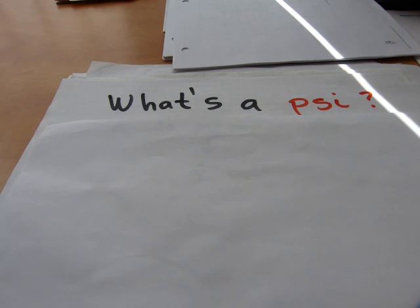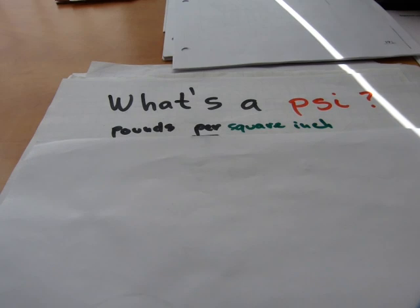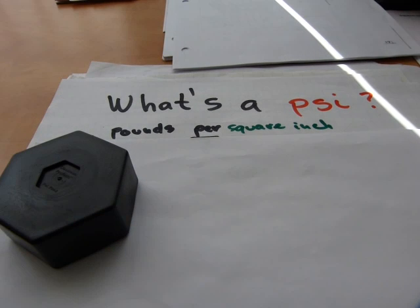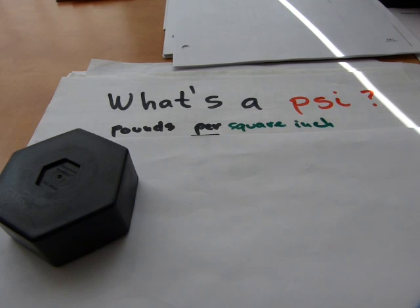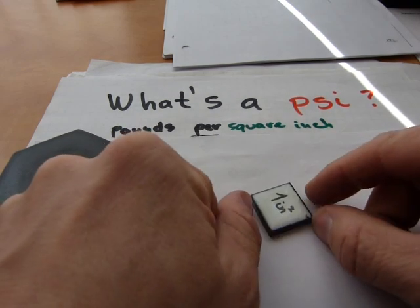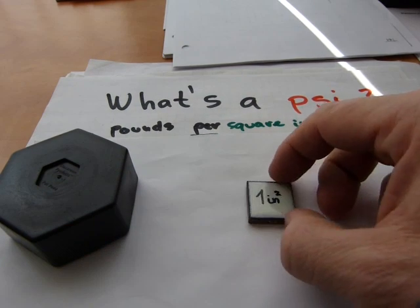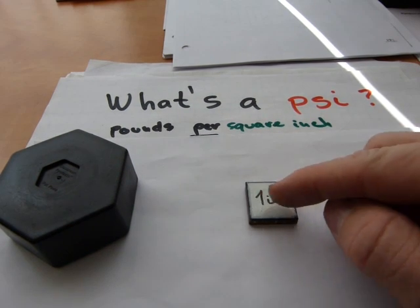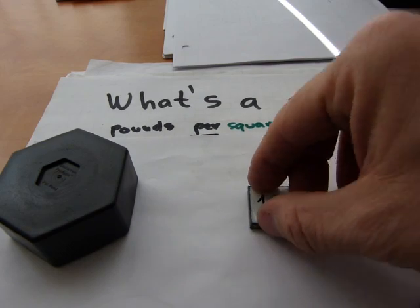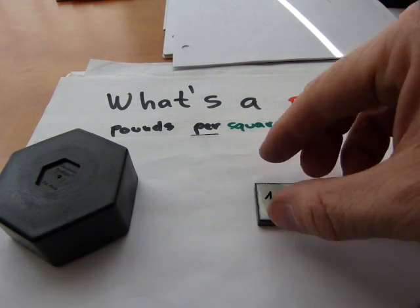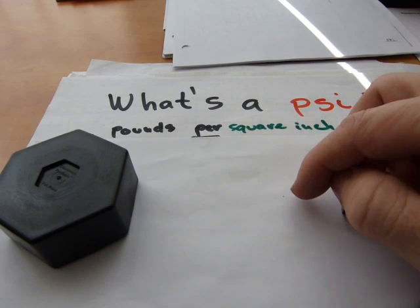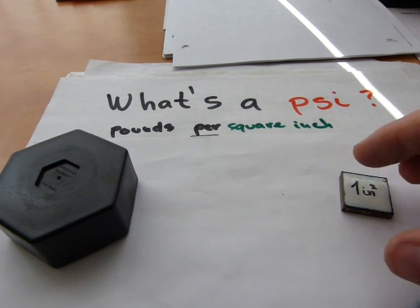PSI stands for pounds per square inch. Fairly straightforward. Pounds is just pounds and square inches is a unit of measure. One square inch is a surface area of this tile here because its width is one inch and its length is one inch, so it's got an area or footprint of one square inch. So if I push it on the paper and it makes a little print, that's one square inch of area.